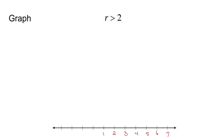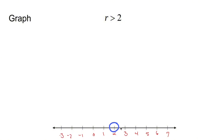It really doesn't matter where you put the 2 as long as it's on there. Now, if you are allowed to include 2, you would put a circle at 2 and fill it in. However, this is not going to be equal to 2 — so you put a circle at 2 and don't fill it in. That means you're not allowed to include 2. R is going to be everything greater than it, like 3, like 5.5, like 2.5. So we shade everything to the right of 2.